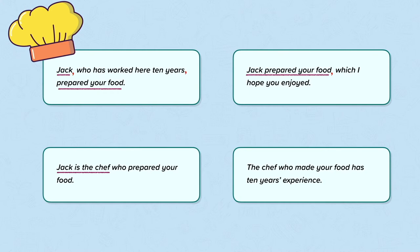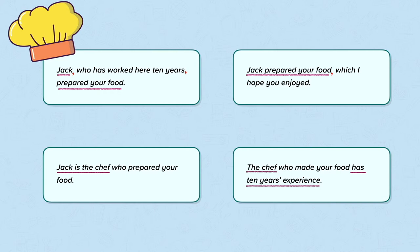And finally: "The chef who made your food has 10 years' experience." The independent clause is "the chef has 10 years' experience." Although that makes sense by itself, it changes the meaning — the fact that he made your food is what makes that chef who he is and is relevant to the meaning of the sentence. Therefore, there are no commas needed. This is a really tricky aspect of commas, so we'll have another look at this in just a few minutes.